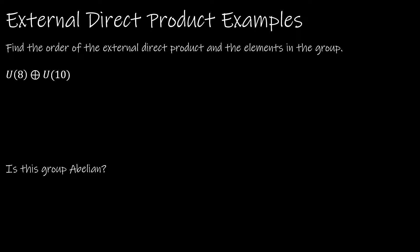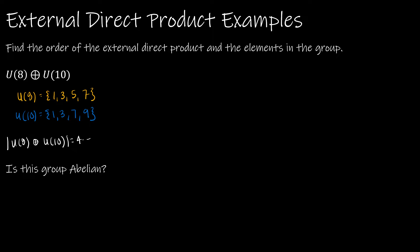Let's start by looking at the external direct product of U8 and U10. U8 is all elements less than 8 and relatively prime to 8: {1, 3, 5, 7}. Similarly, U10 is all elements less than 10 and relatively prime to 10: {1, 3, 7, 9}. Each has 4 elements, so the order of U8 is 4 and the order of U10 is 4. Therefore the order of the external direct product of U8 and U10 is 4 times 4, which is 16 — so there will be 16 elements in the set.